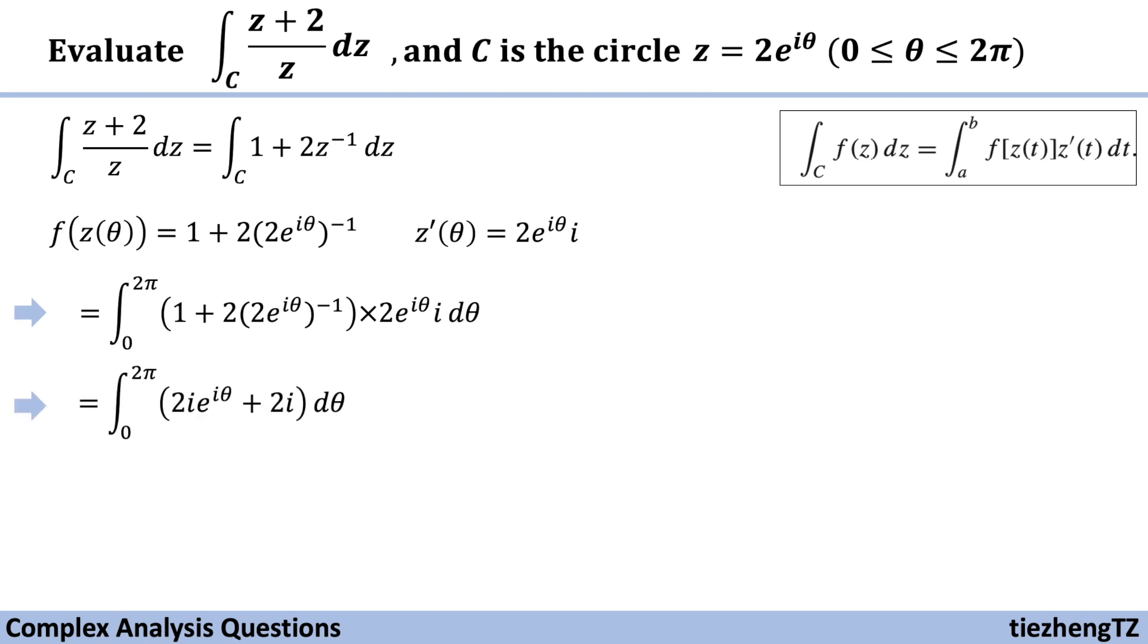And reorganize, our equation becomes integral from 0 to 2 pi, 2 times i times e to the power of i theta plus 2 times i d theta.